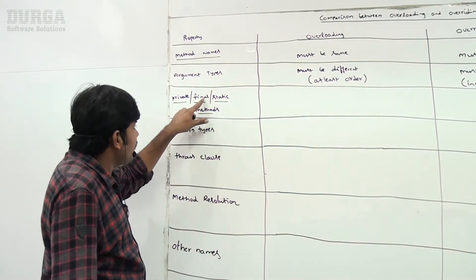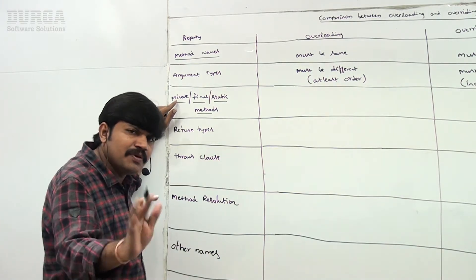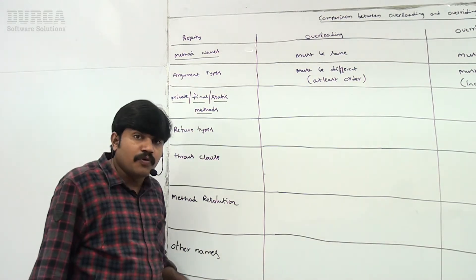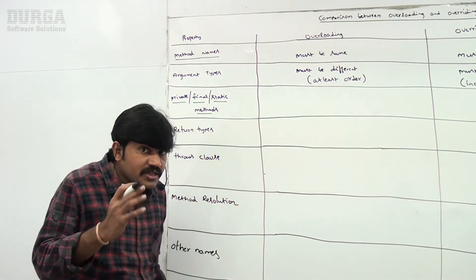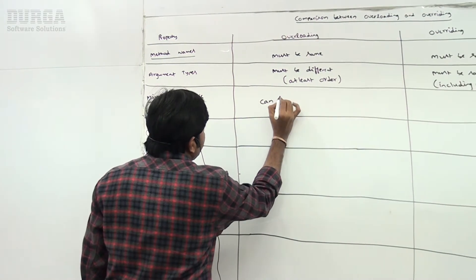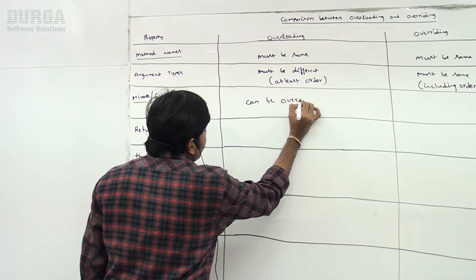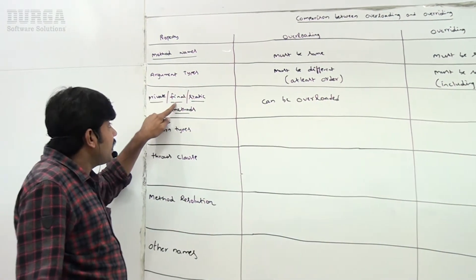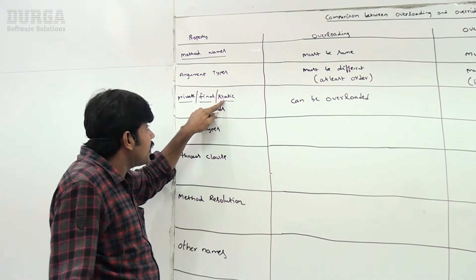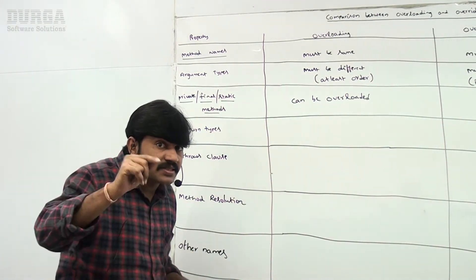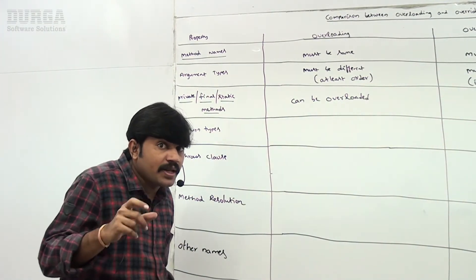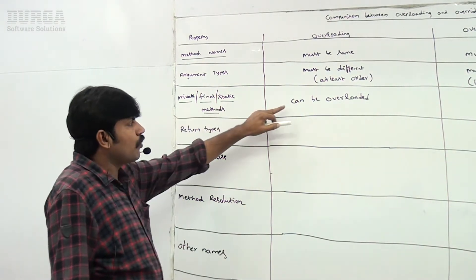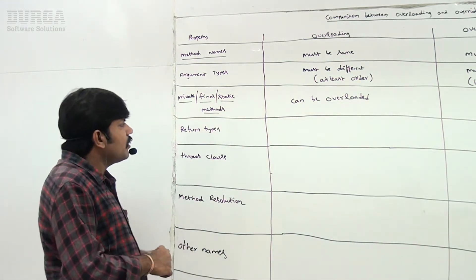Regarding private, final, and static methods — in overloading there are no restrictions. Private methods can be overloaded, static methods can be overloaded, final methods can be overloaded. No problem at all, as we also discussed when covering main method overloading.